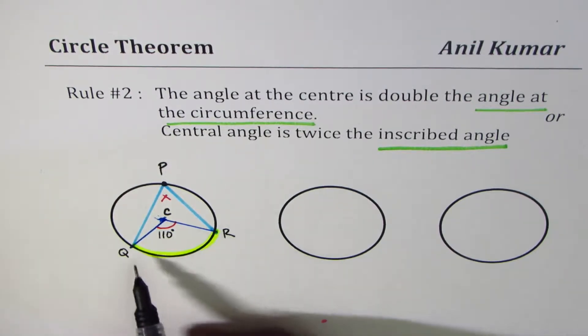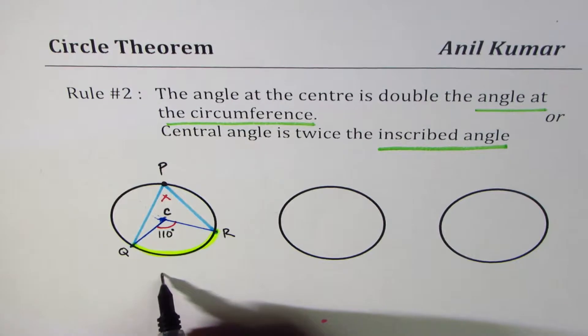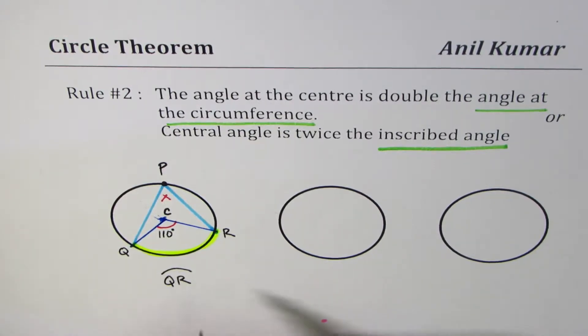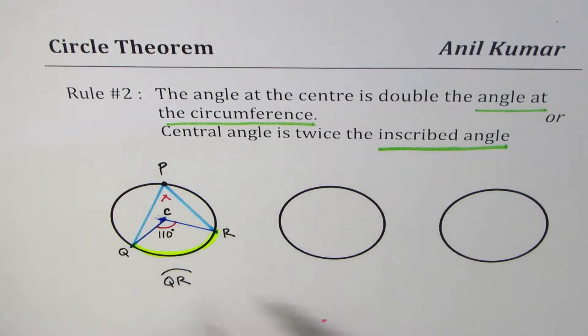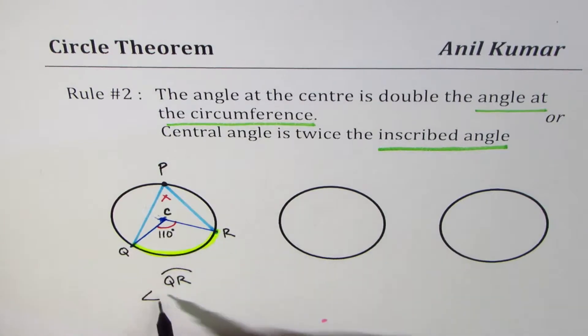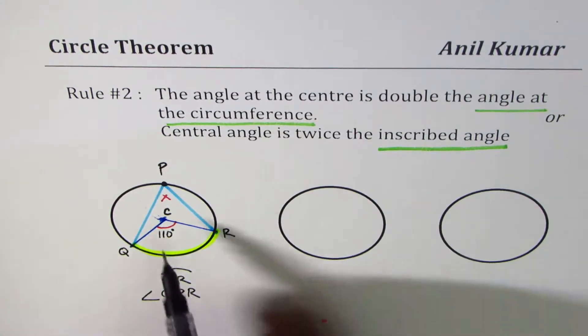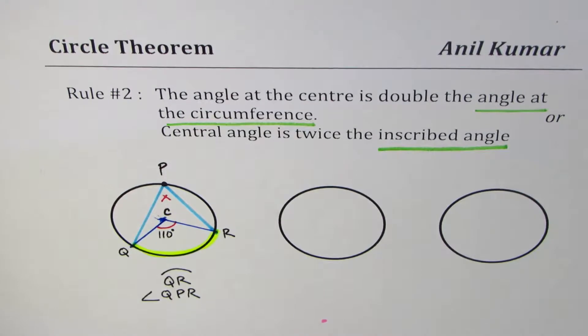So we're talking about an arc QR. So we have an arc QR. The inscribed angle is angle QPR. So this angle is the inscribed angle.